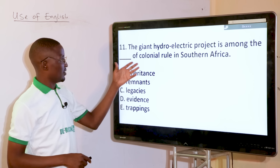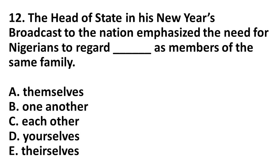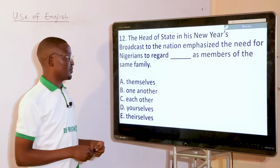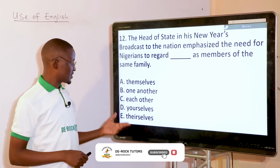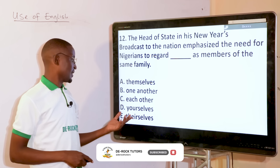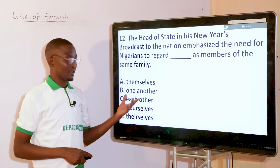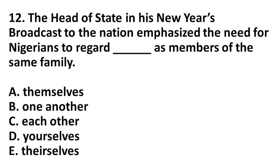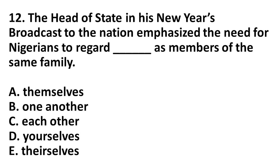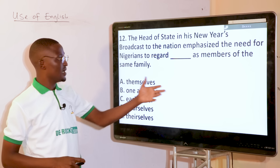The head of state, in his New Year's broadcast to the nation, emphasized the need for Nigerians to regard dash as members of the same family. This is pronominal — reflexive and reciprocal pronouns. Themselves and yourselves are reflexive; their selves is ungrammatical — say themselves instead. For reciprocal pronouns, each other is used for two people, while one another is used for more than two. Since we are talking about Nigerians — a multiplicity — the answer is one another: they should regard one another as members of the same family.